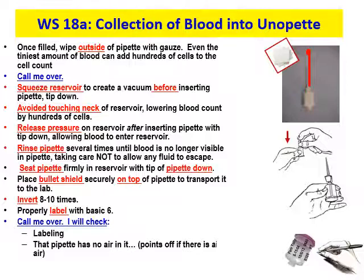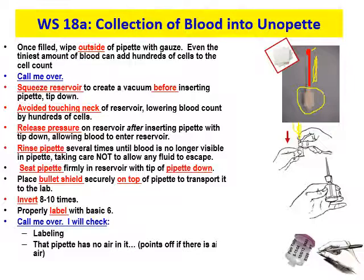Squeeze the reservoir to create a vacuum before inserting the pipette tip-down. Put your finger over the other end, just like we talked about with a straw. With the outside wiped clean and no bubbles, turn it over, squeeze the reservoir in, and put it down into the reservoir — avoiding touching the neck. Once it's down in there, release both your finger on the outside and your fingers on the side of the reservoir, and it will suck the blood from the capillary down into the diluent.